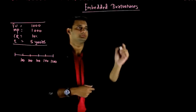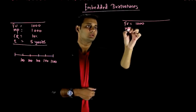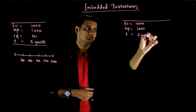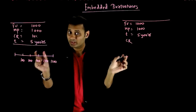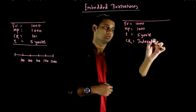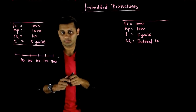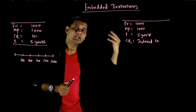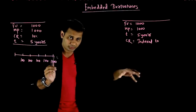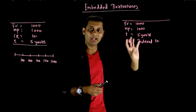Now one more contract. Face value: 1000. Market price for simplicity: 1000. Maturity: 5 years. Now the coupon rate is different — it is not fixed. The coupon rate will depend on some other factor. That means the value each year will keep on changing. So basically when the cash flows are dependent on some other factor, that value keeps changing.